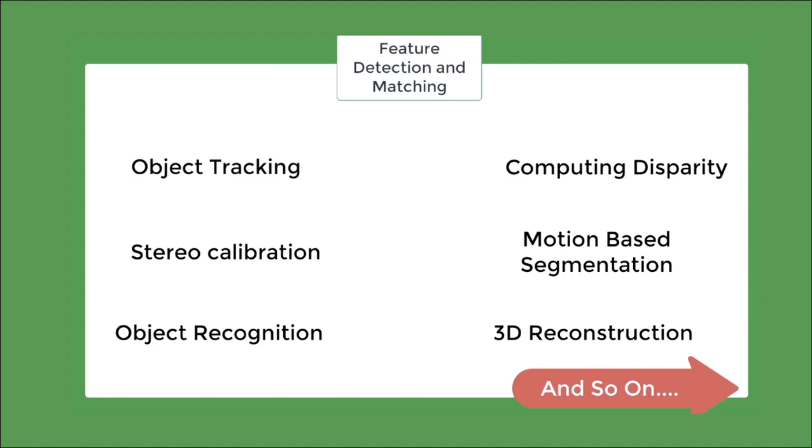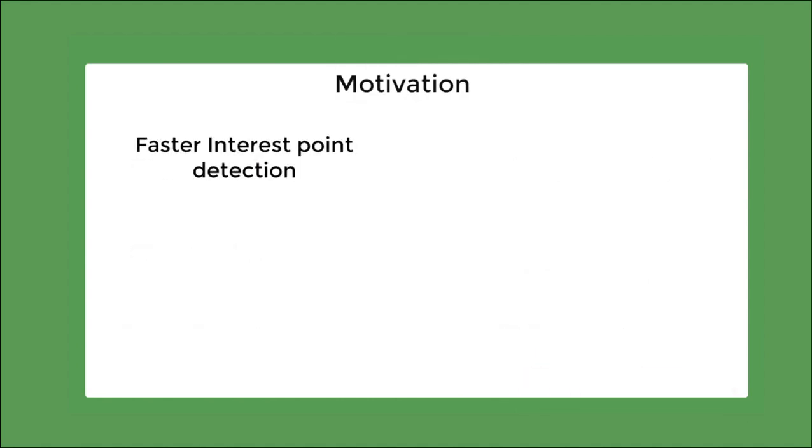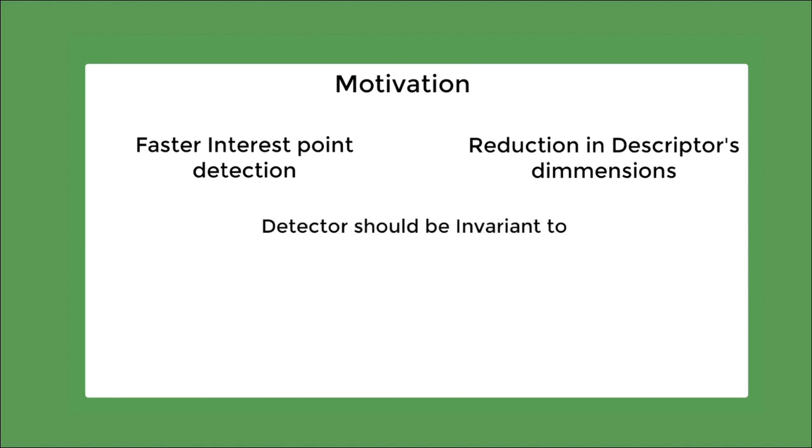So what's the motivation behind this paper? The author wanted to have faster interest point detection for real-time application, reduction in the dimensions of the descriptor while keeping it sufficiently distinctive. Also, the detector should be invariant to geometric variations, scale changes and photometric variations.